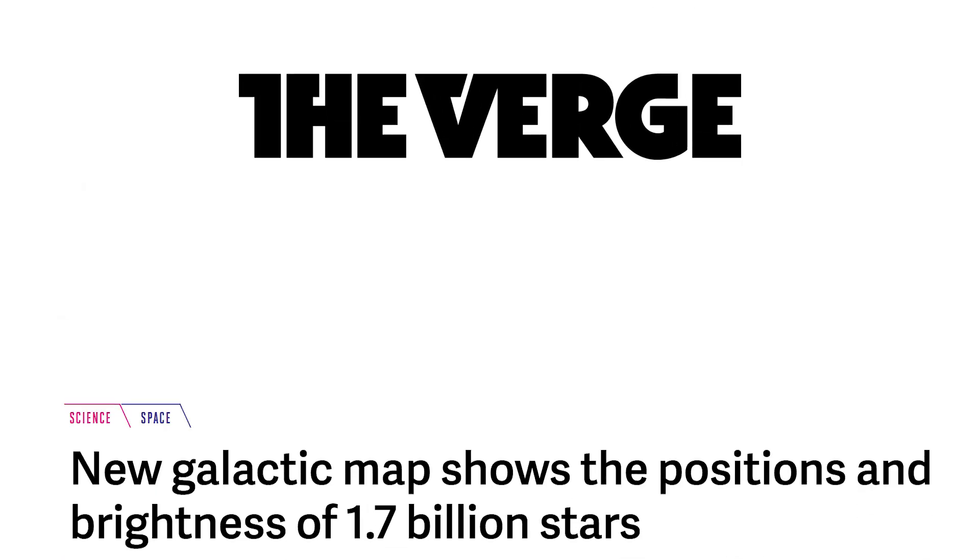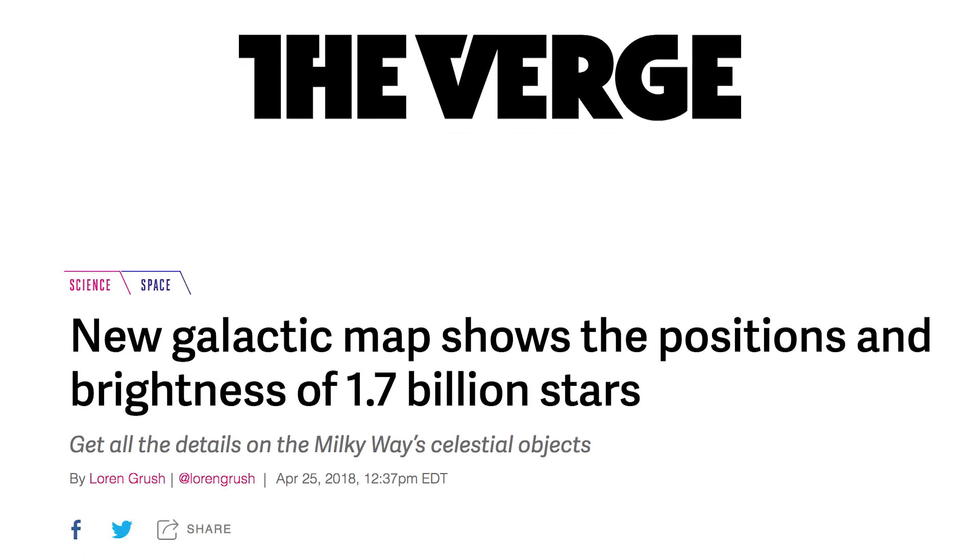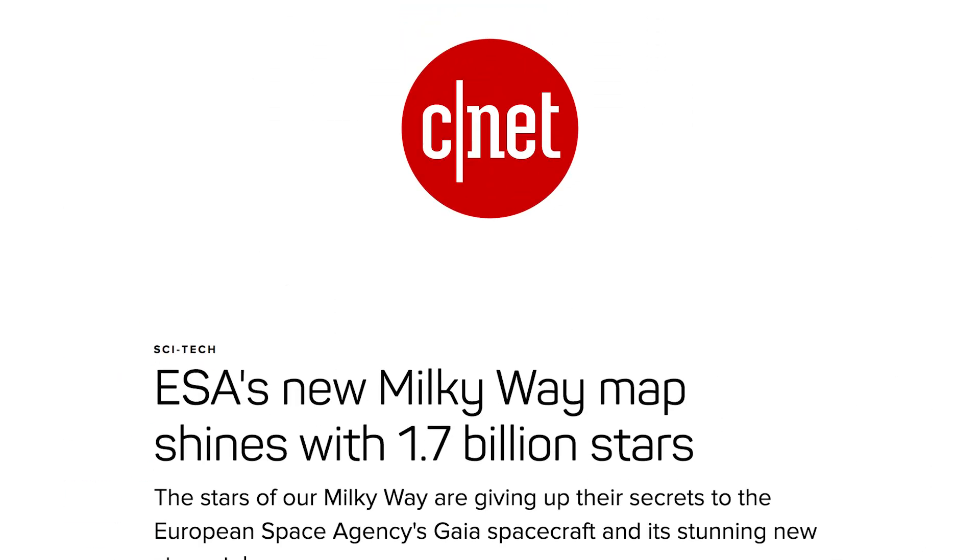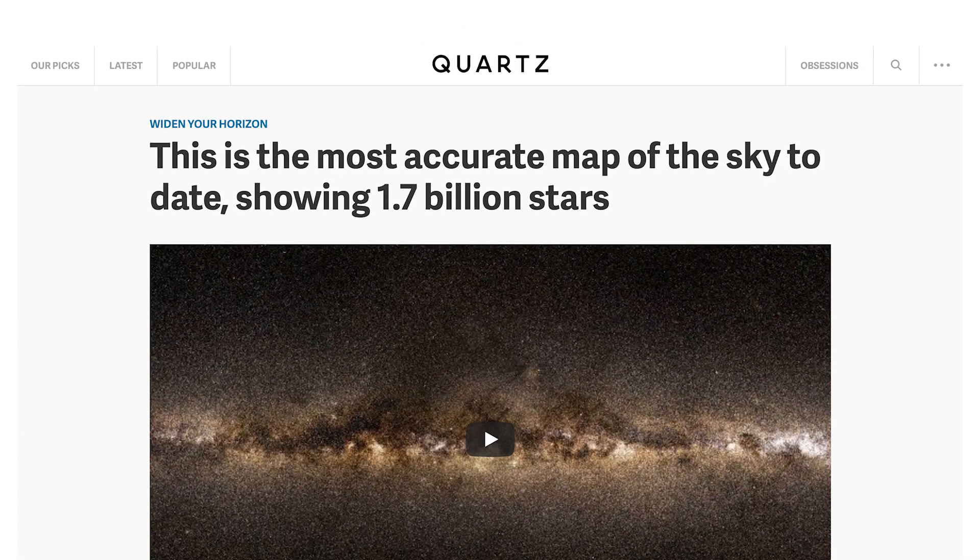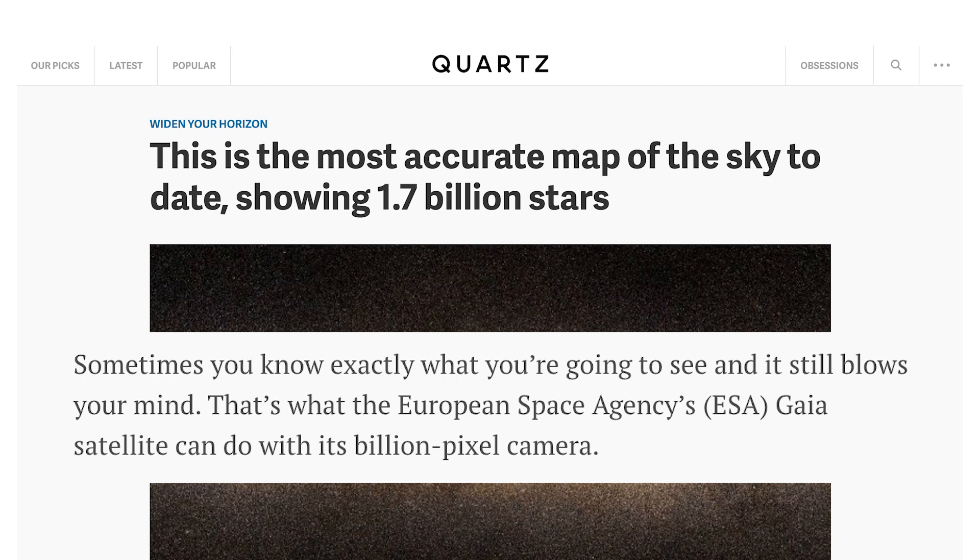The Gaia data made headlines across more than just astronomy publications. The Verge called it the largest radial velocity survey ever conducted. CNET explained that it's a catalog of not fashion, but stars. And a piece in Quartz started with this phrase: Sometimes you know exactly what you're going to see, and it still blows your mind.